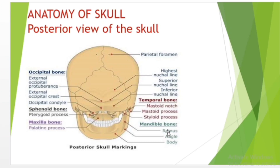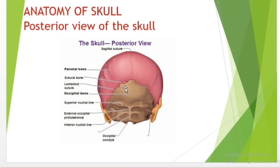The mandible bone is composed of the ramus, angle, and body. The body is the horizontally curved portion that creates the lower jawline. The rami are the two vertical processes located on either side of the body. They join the body at the angle of the mandible.